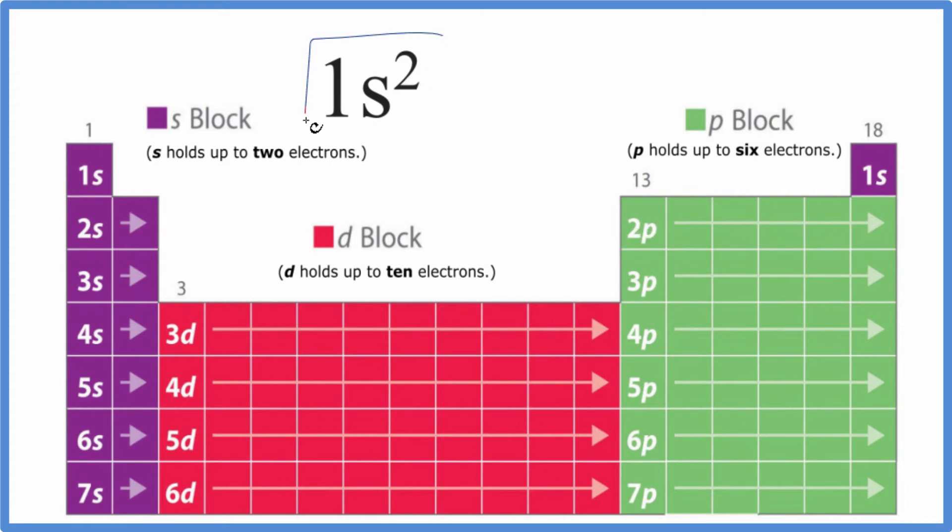But we're looking for something that ends in 1s2. So we go to the first row here, 1s1. This would be 1s2. So this is the element on the periodic table that has the electron configuration 1s2.